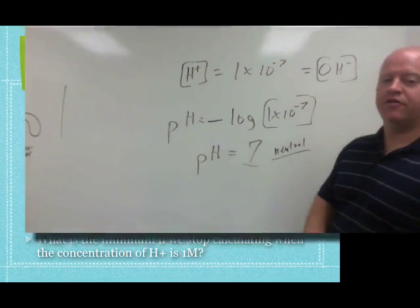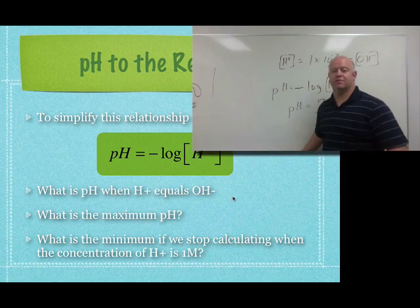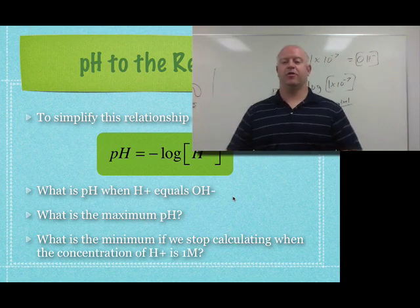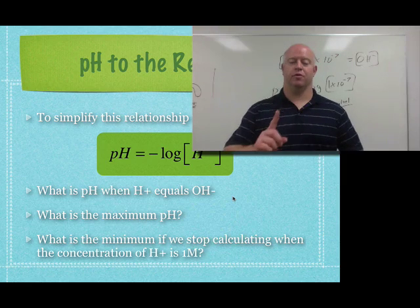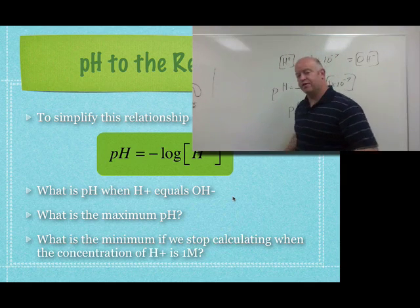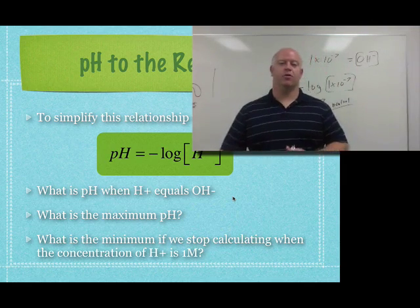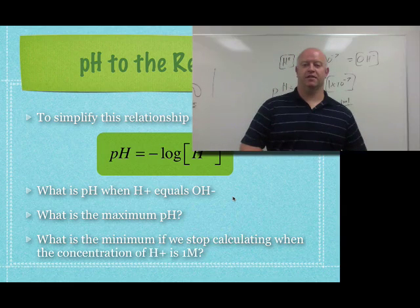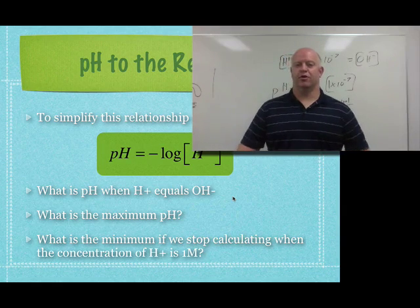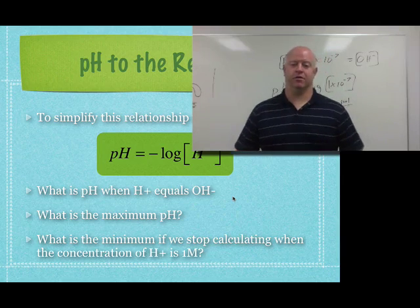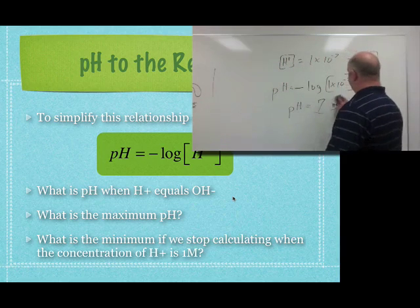Now if we take a look at this idea of what is the minimum if we stop calculating when the concentration is 1 molar. In terms of equilibrium, if you get much more than a 1 molar concentration of H plus ions, or hydroxide ions, you really have kind of broken that equilibrium, and you're no longer at equilibrium.